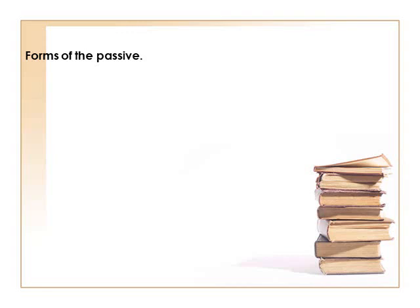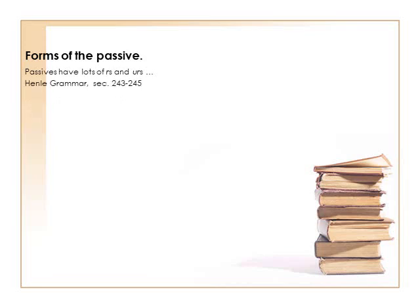Now, the forms of the passive — and here's where you're going to have your grammar book. The forms of the passive have lots of UR's and R's. So we'll take a look at that in a second. This is in your Henley grammar, section 243, which is going to be on page 56. But before we get to that, we're looking at first conjugation in this lesson.